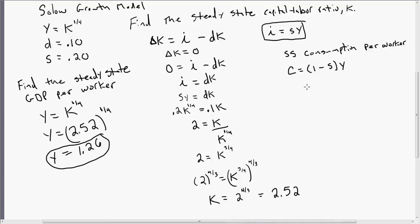So consumption equals 1 minus the saving rate times Y, GDP per worker. So S is given to us as 0.2. Y is 1.26. So simplifying that, we get C equals 1.01. So that's consumption per worker in the steady-state.